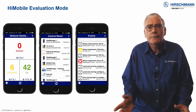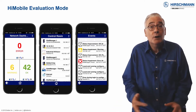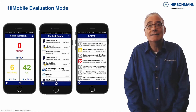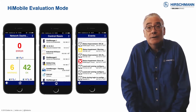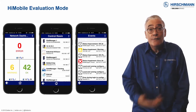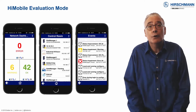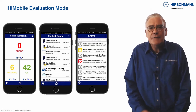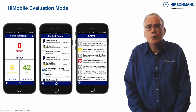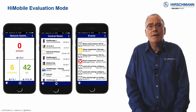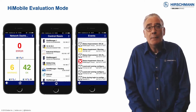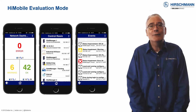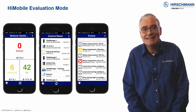Scroll around to the network topology map. Drill down into the devices to see the status of components. Filter the event log to look for specific devices. If you want to appreciate the convenience of having network management in your pocket, download the app and give it a test.